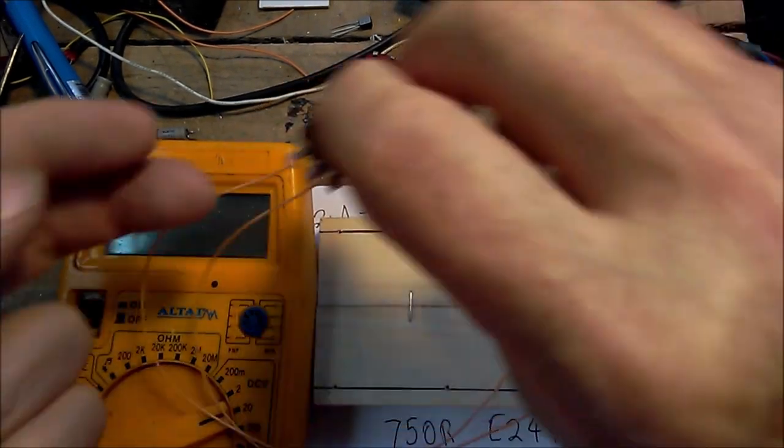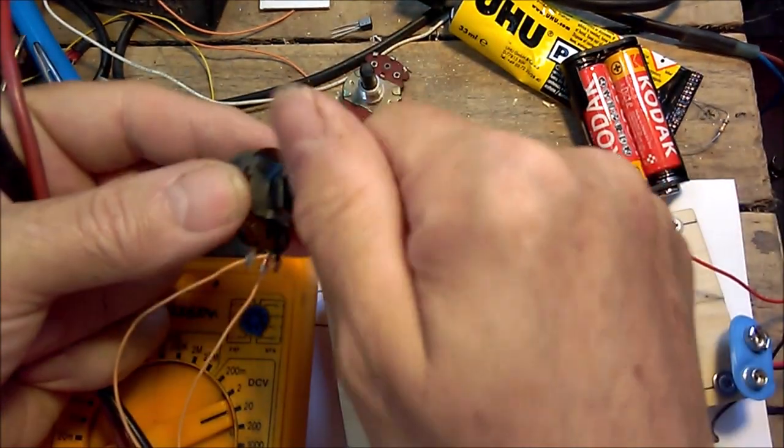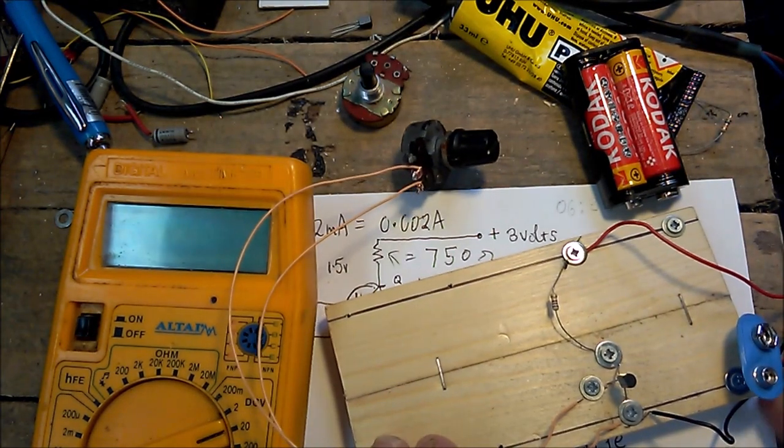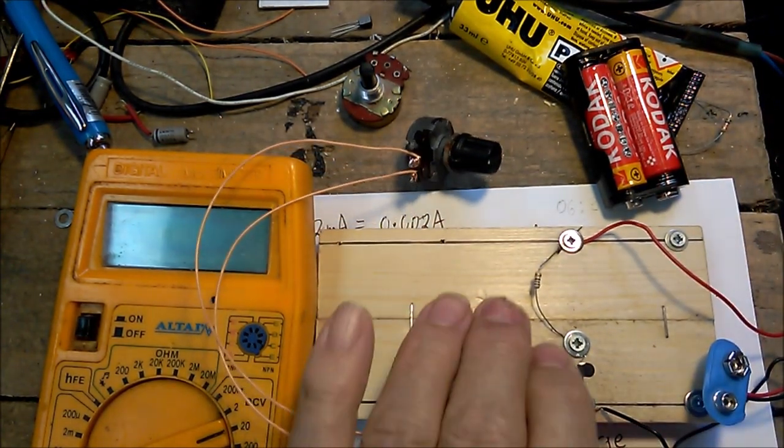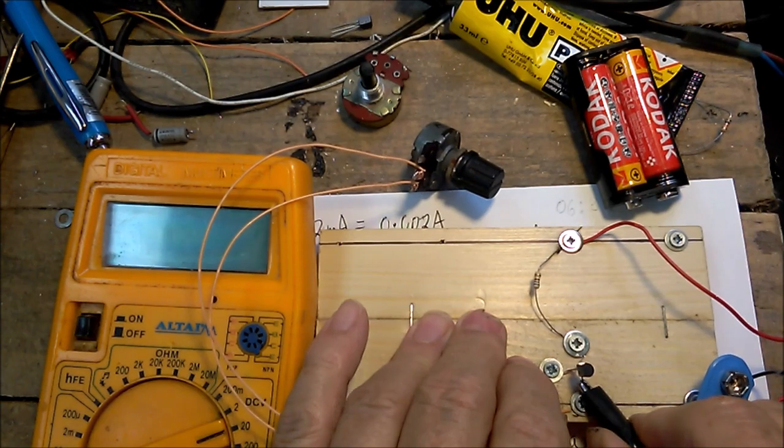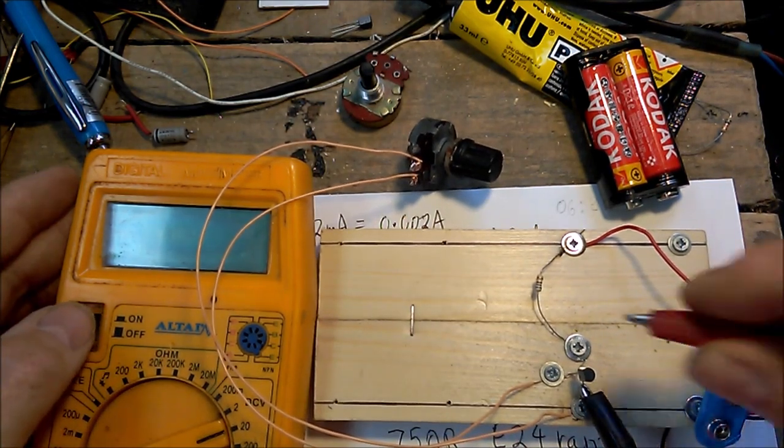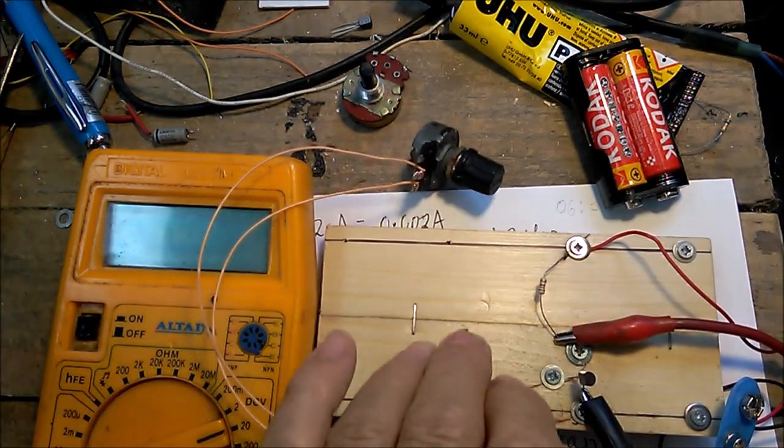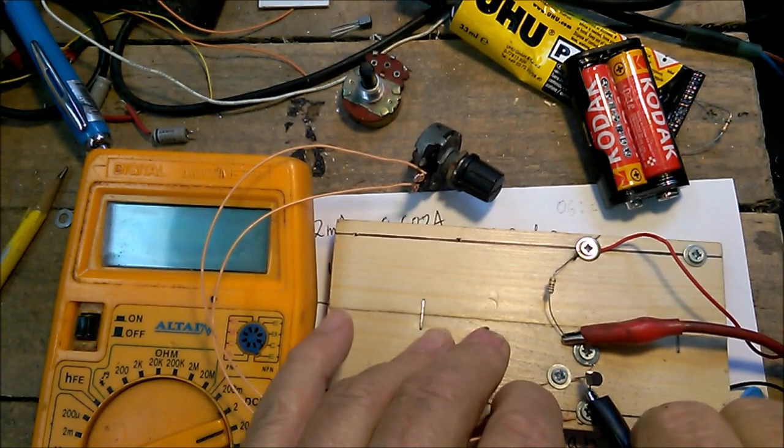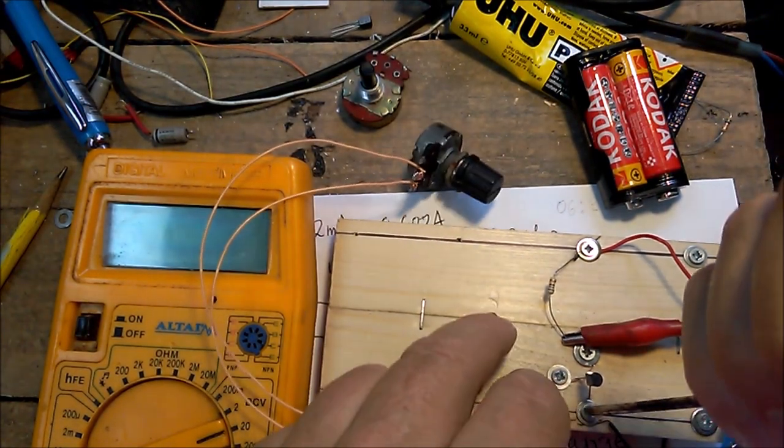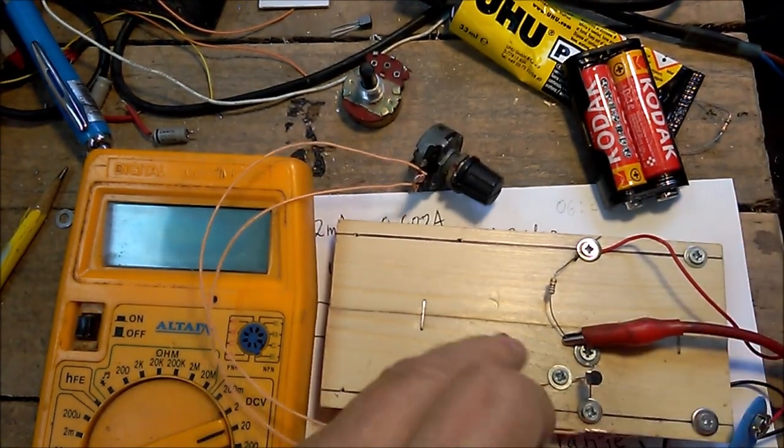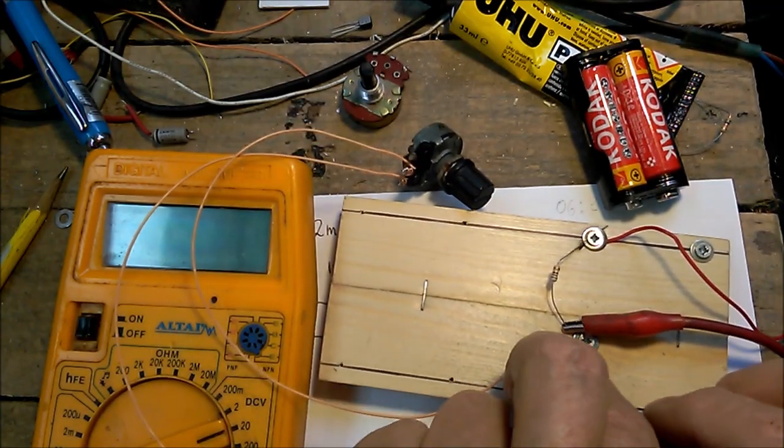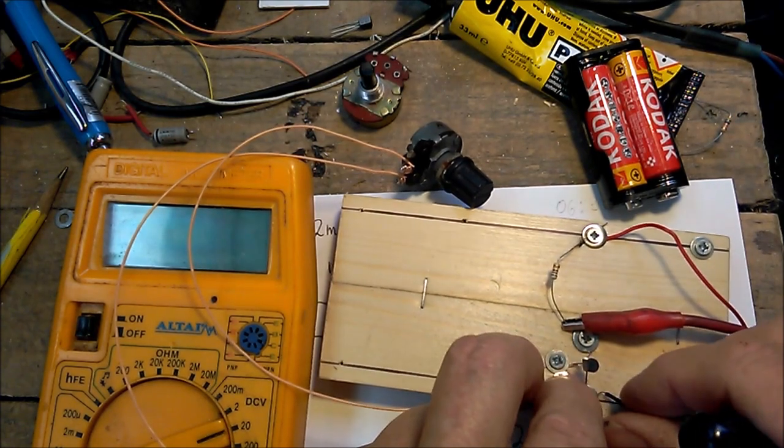We set the potentiometer to maximum resistance, which is minimum current flowing through the junction of the transistor. We put negative there of the meter, the multimeter, the positive on the collector. Actually, I've just realized I've done it wrong - that doesn't go there.